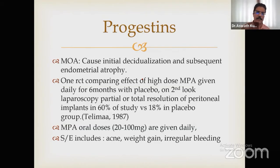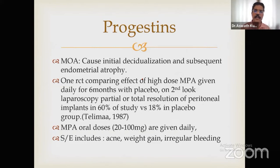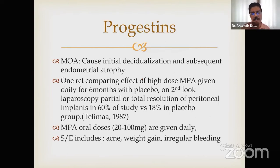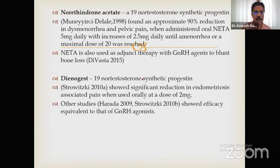Progestins work on the principle of initial decidualization and subsequent endometrial atrophy. An RCT compared high-dose oral medroxyprogesterone acetate daily for six months versus placebo, with a second-look laparoscopy, and found 60 percent resolution compared to only 18 percent with placebo. Oral MPA doses have to be very high — 20 to 100 mg daily — but problems of acne, weight gain, and irregular bleeding arise.